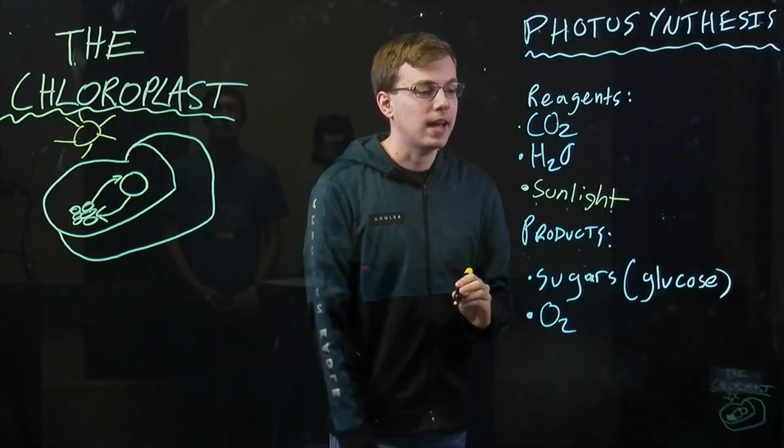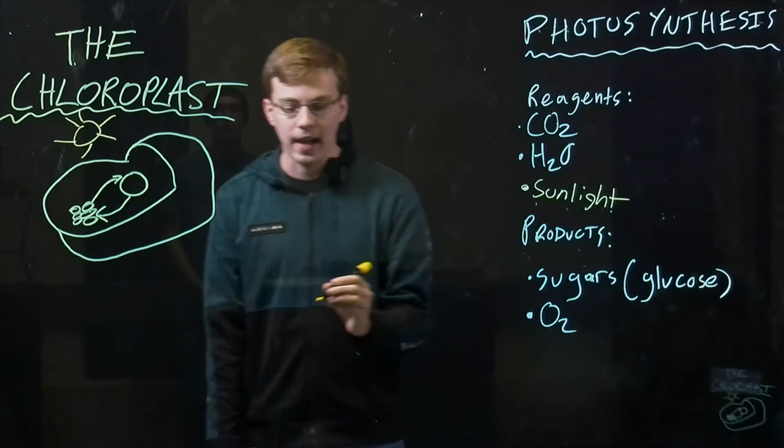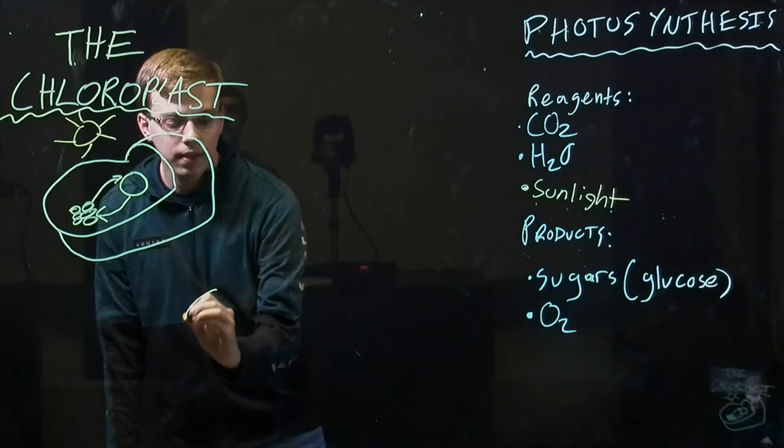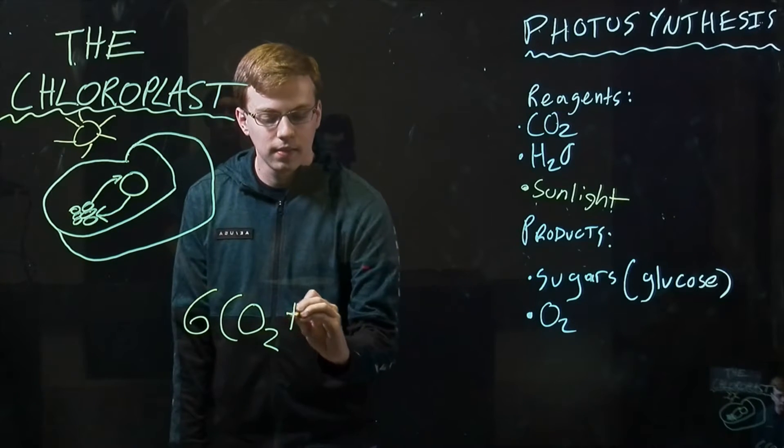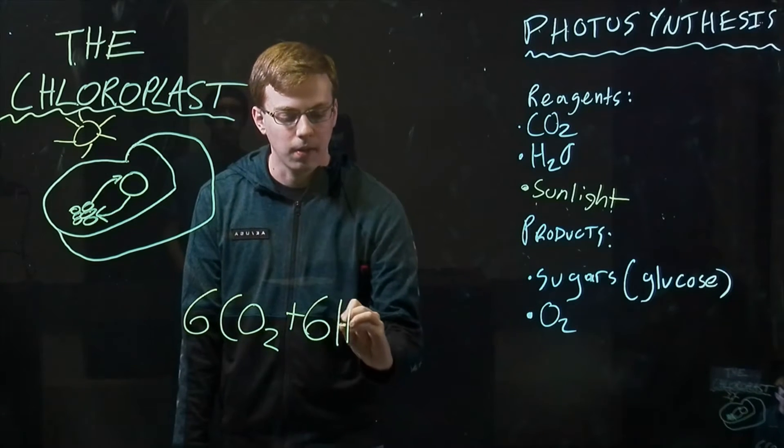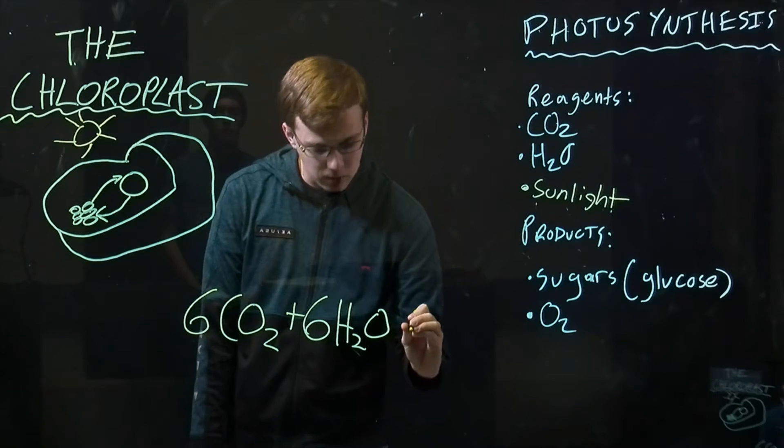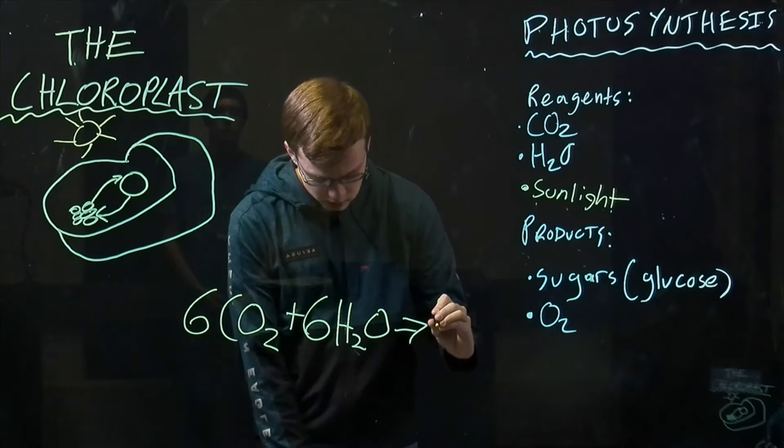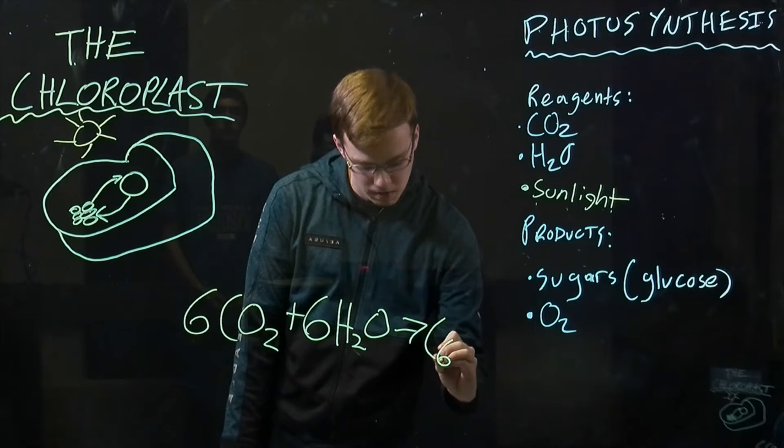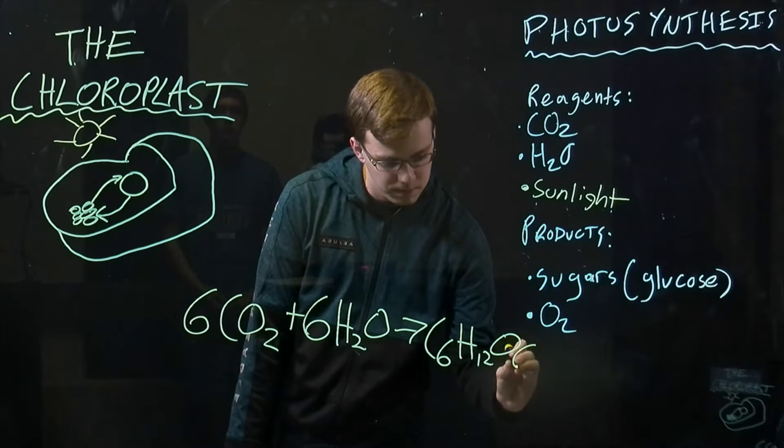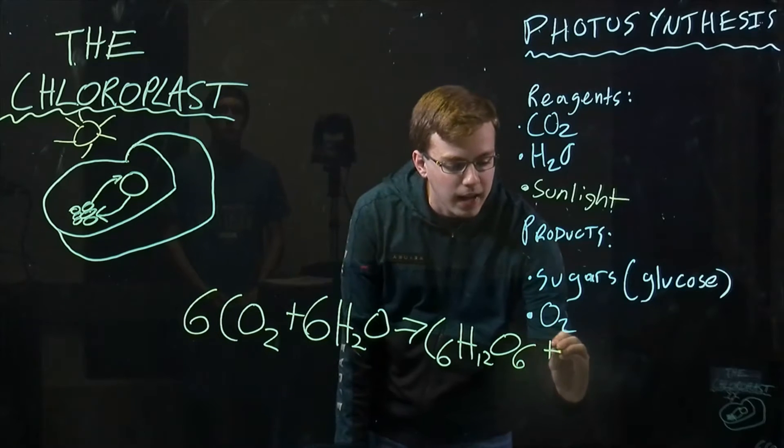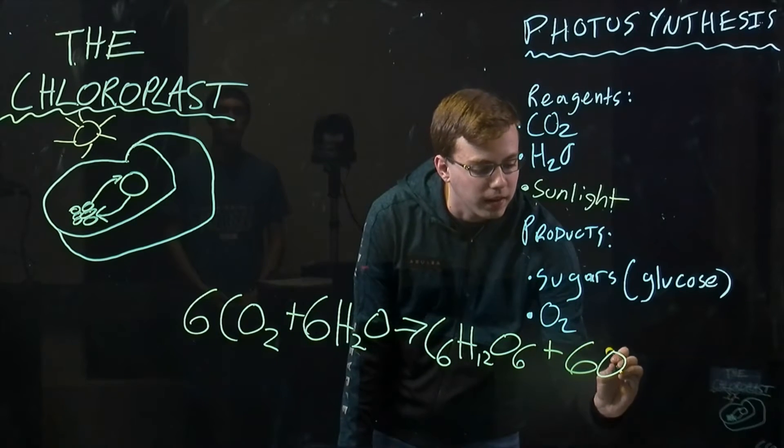So the chloroplast takes that in, it does the chemical reaction. The formula is 6CO2 plus 6H2O, or water, goes to glucose and 6 molecules of oxygen.